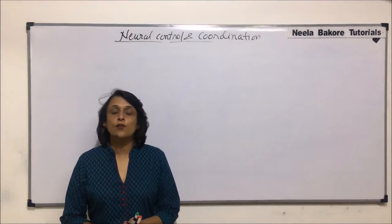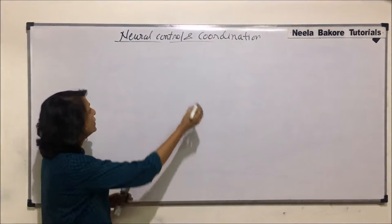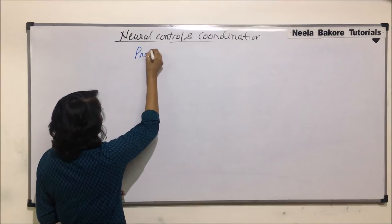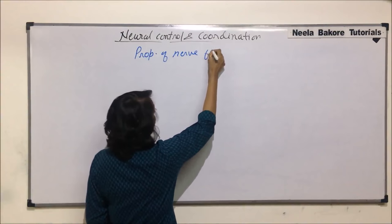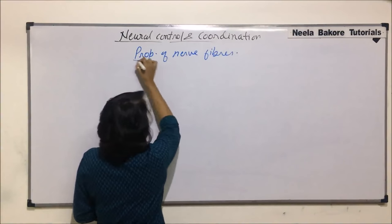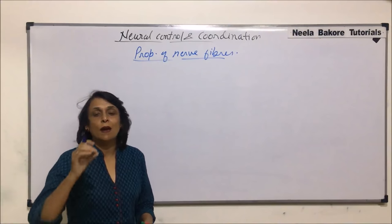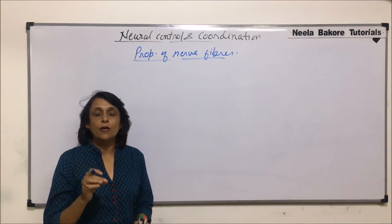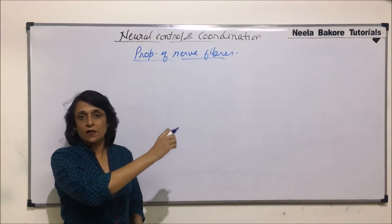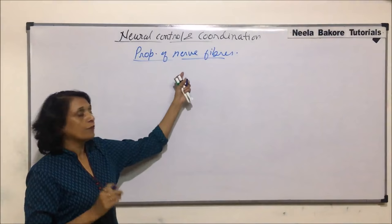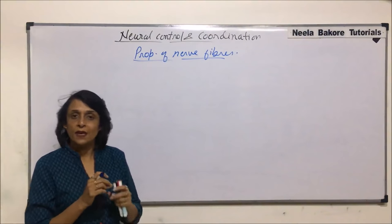In this video we'll talk about the various properties of nerve fibers. When we talk about properties of nerve fibers, we are actually talking about only one axon. All these neurons join to make a nerve, so when we talk of this membrane we are actually talking of the axon membrane or the nerve fiber membrane.